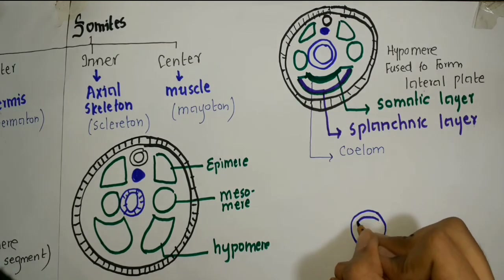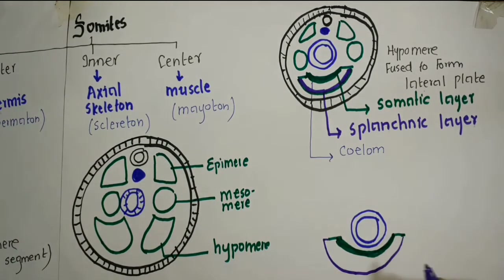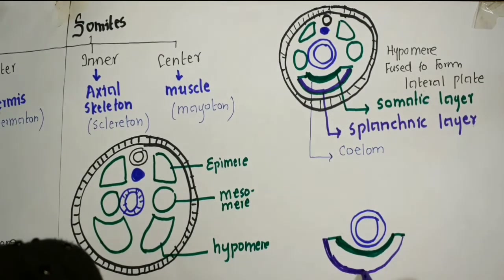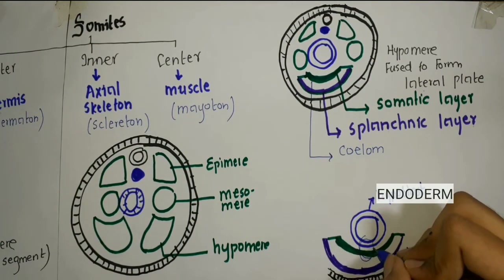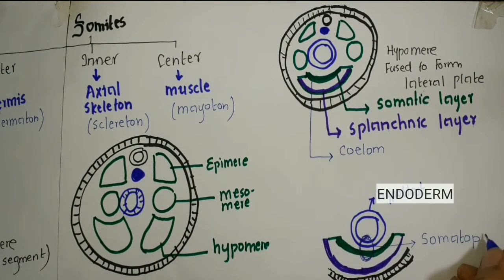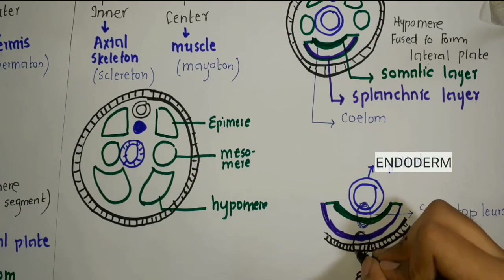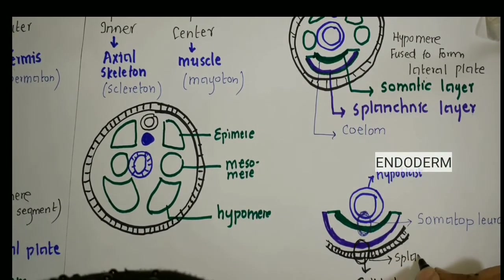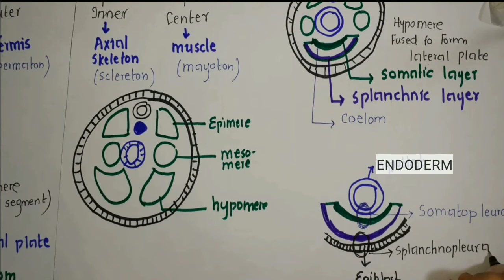Now let us see how the somatopleural and splanchnopleural layers are formed. The lower portion of the ectoderm and the somatic layer fuse to form the somatopleural layer. The endoderm and the splanchnic layer fuse to form the splanchnopleural layer. And that is all for the development of chick.